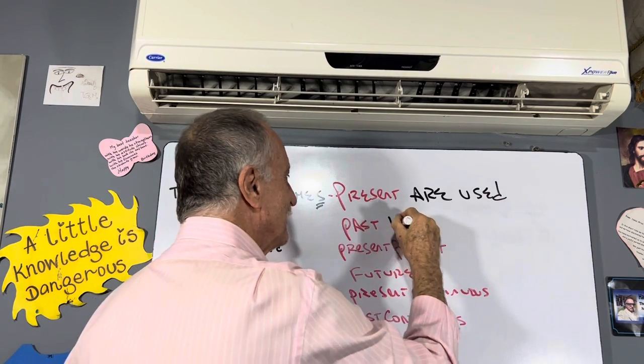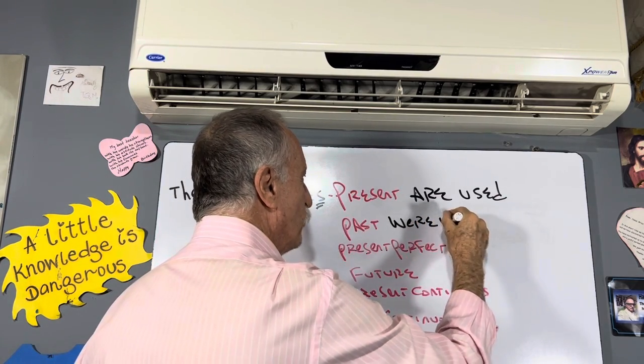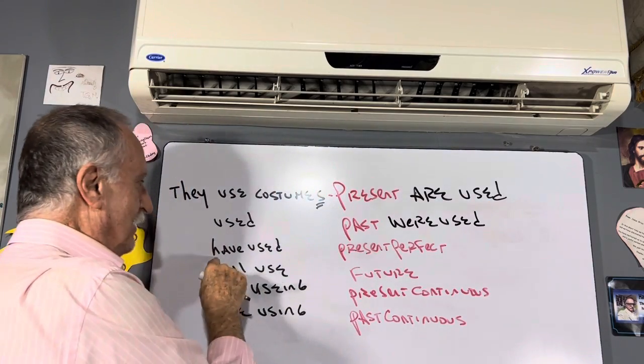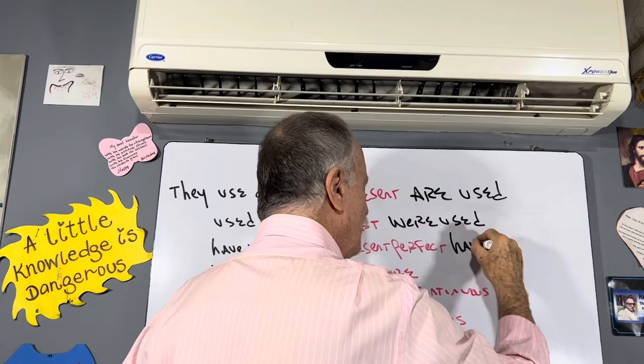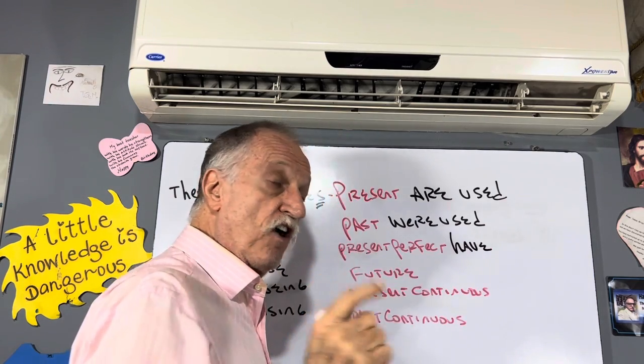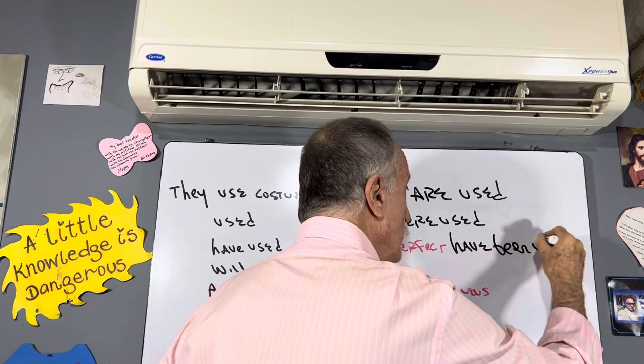Past: were used. Have used—present perfect. Have. Remember your verb to be. Been used.